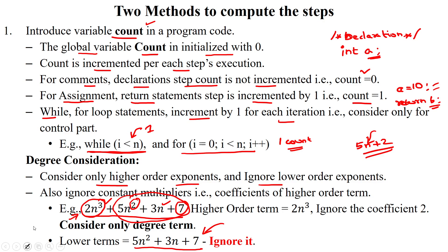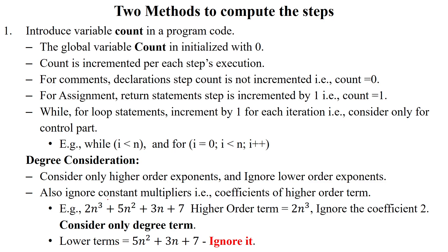We will also ignore the constant multipliers — that means the coefficient of the higher order term. First we identify the higher order term, then we ignore its coefficient. Finally, we consider only the higher order term without its coefficient.